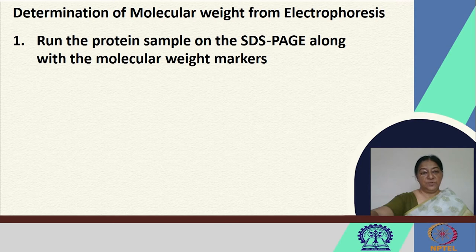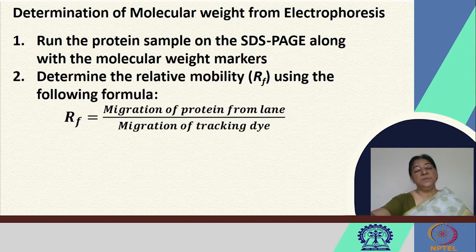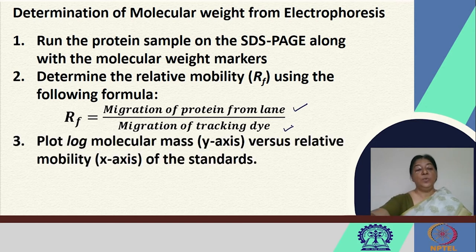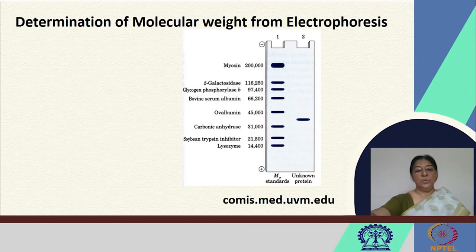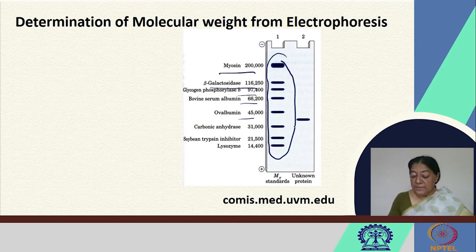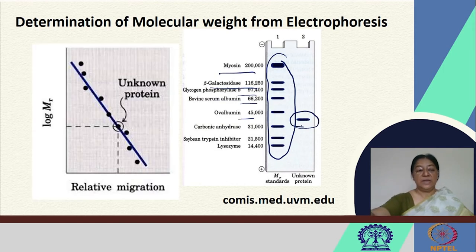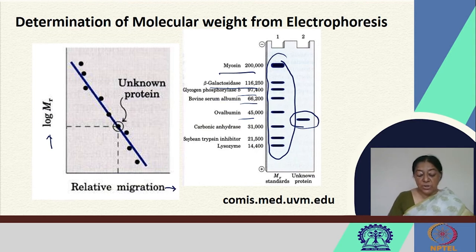To determine the molecular weight from electrophoresis, we run the protein sample on SDS-PAGE along with standard molecular weight markers. We determine the relative mobility using a formula based on the migration of the protein from the lane and the migration of the tracking dye. Following that, we plot the log of the molecular mass versus the relative mobility of the standard samples. We have a linear regression equation that determines the mass of the unknown protein. When we look at the standard set in lane one with their corresponding molecular weights, we can generate a calibration curve with log molecular weight on the y-axis and relative migration on the x-axis, and based on the relative migration of the unknown protein from the gel, we can find the molecular weight of the protein of interest.